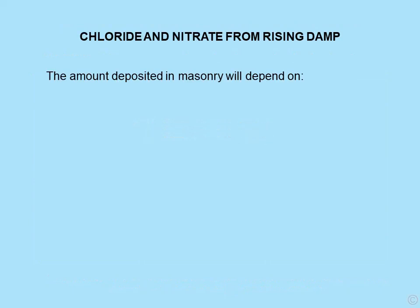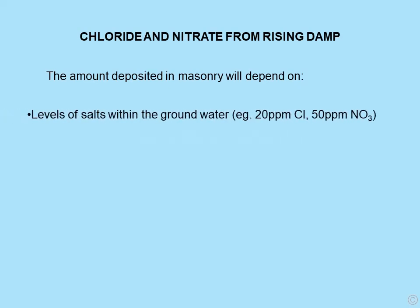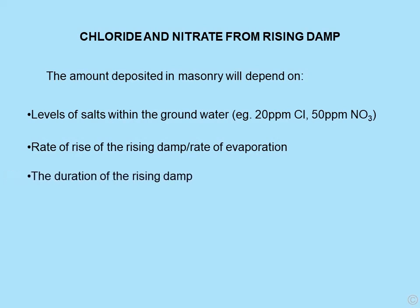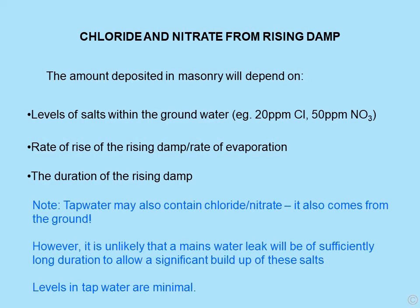Chloride and nitrate from rising damp: the amount deposited in masonry depends on the levels of salts within the groundwater — for example, groundwater around Buckingham contained 20 parts per million of chloride and 50 parts per million of nitrate — the rate of rise of rising damp, the rate of evaporation, and the duration of the rising damp. In properties without a damp proof course, this can be over a hundred years. Tap water may also contain chloride and nitrate, but it is highly unlikely that a mains water leak would be of sufficiently long duration to allow significant build-up.